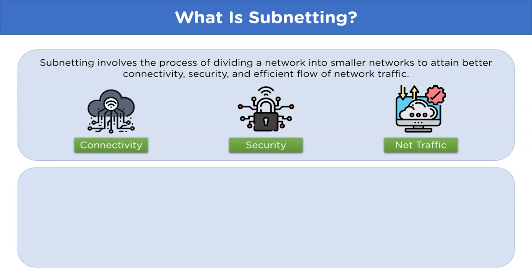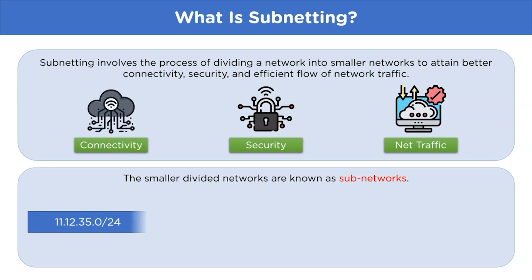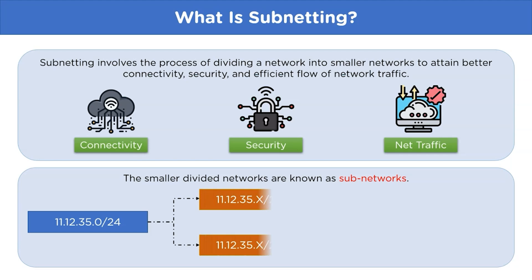The smaller divided units of the network are known as subnetworks. Taking an example of an IP address with /24 representing the subnet mask — it can be divided into two subnetworks of /25 subnet mask, which can further be divided into smaller subnetworks.